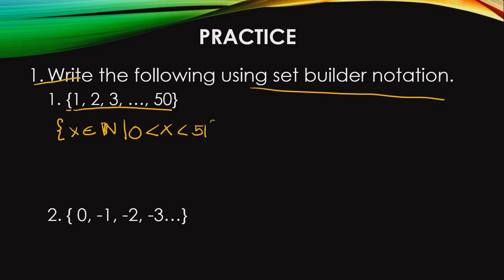So between 0 and 51 — if we draw a number line, we have 0, 1, 2, 3, 4 until 50. So the elements in the set are from 1 until 50.